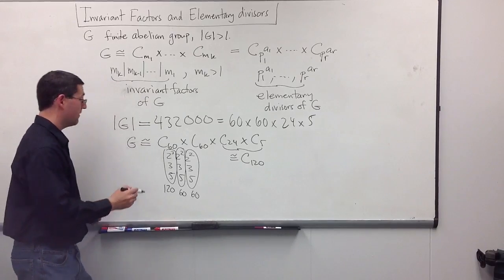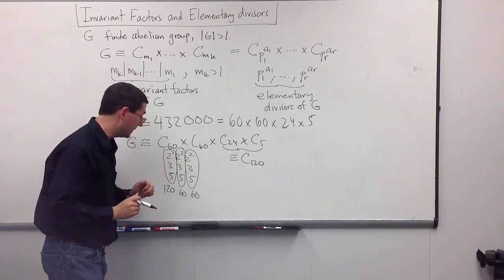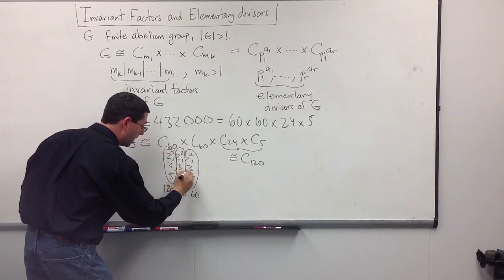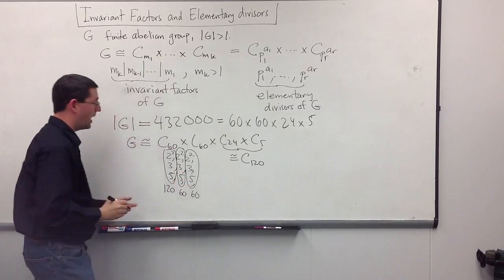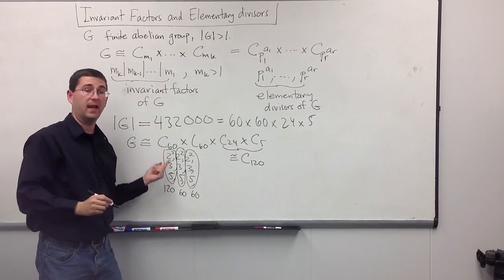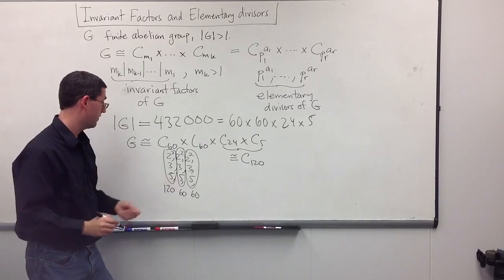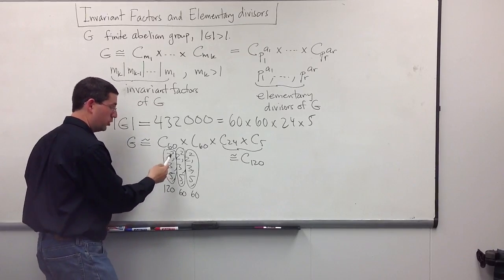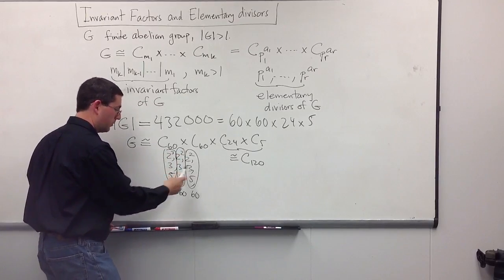Furthermore, if I read these things horizontally, put some commas in here, I can get out all of the elementary divisors. The elementary divisors will be 2 cubed, 2 squared, 2 squared, 3, 3, 3, 5, 5, 5.